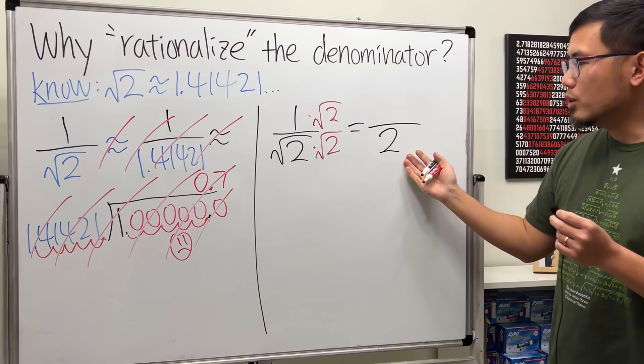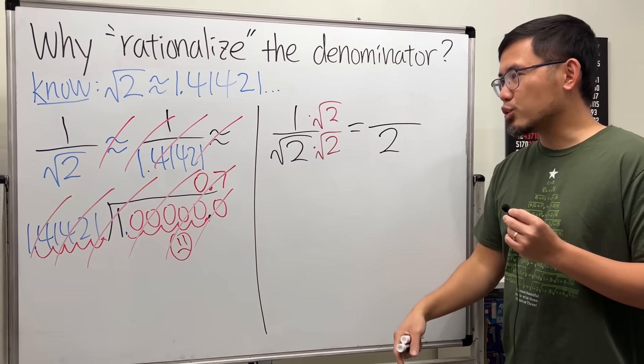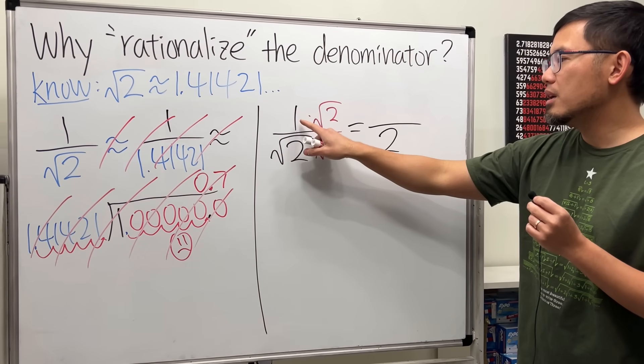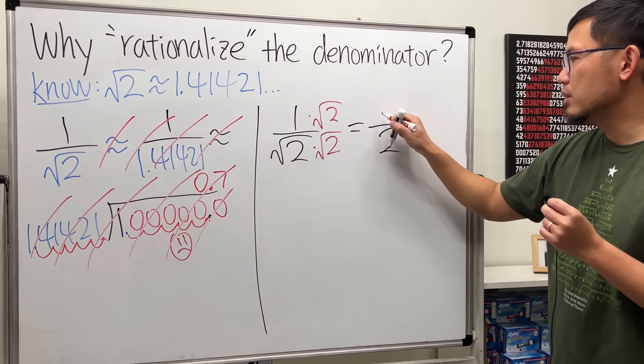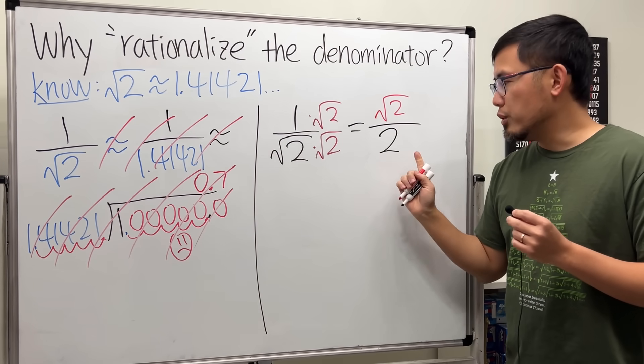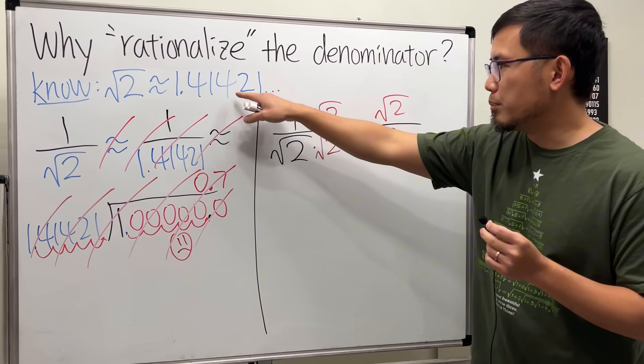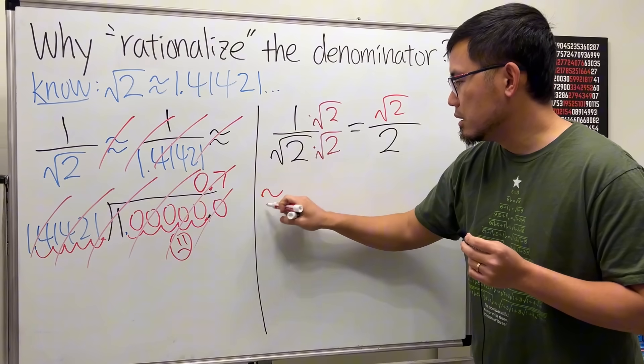See? No more square roots on the bottom. This is a rational number. I know there's a trade-off because the top is going to be 1 times √2, but this trade-off is much better. We prefer to have a rational number on the bottom because now we know this is approximately 1.41421...